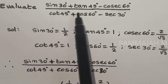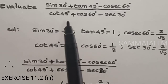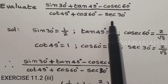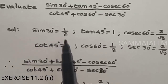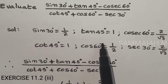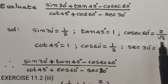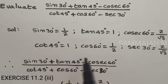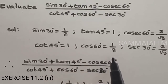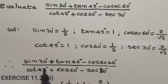Evaluate sin 30 degrees plus tan 45 degrees minus cos 60 degrees upon cos 45 degrees plus cos 60 degrees minus secant 30 degrees. Here sin 30 degrees is 1 by 2, tan 45 degrees is 1, cos 60 degrees is 1 by 2, and secant 30 degrees is 2 by root 3.